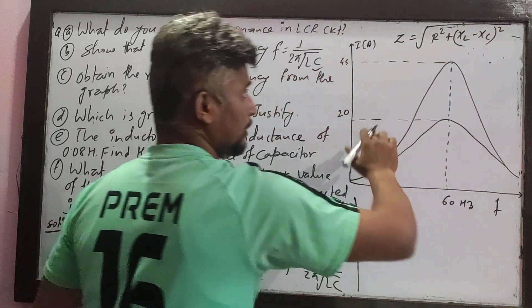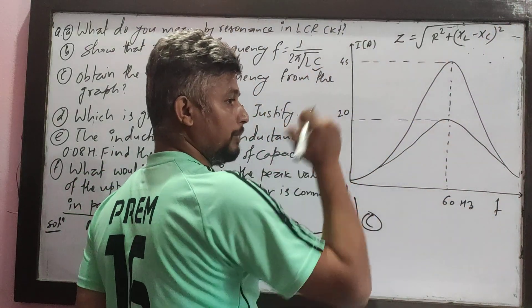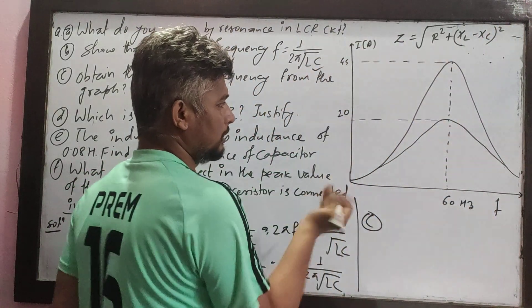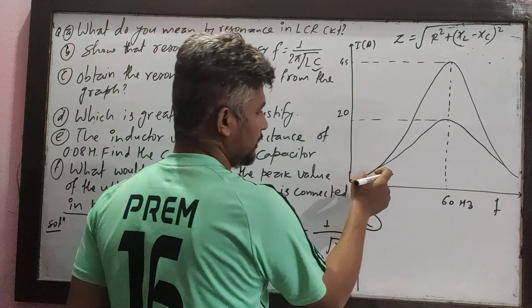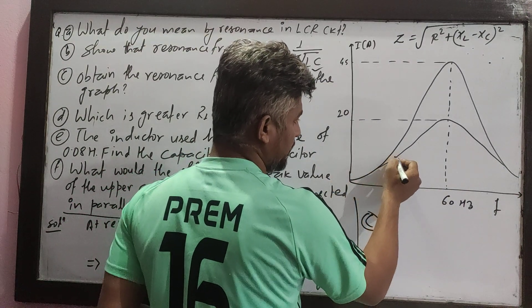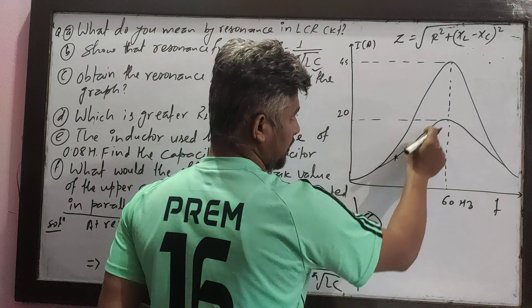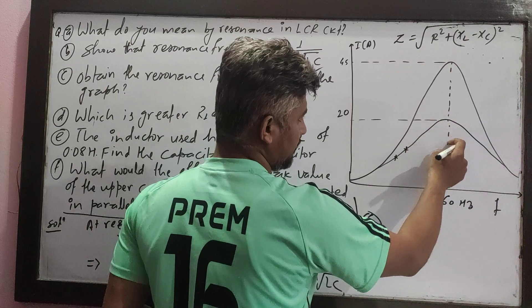This means the impedance value is minimum and the current is maximum. Looking at the graph, the current maximum corresponds to the resonance frequency.